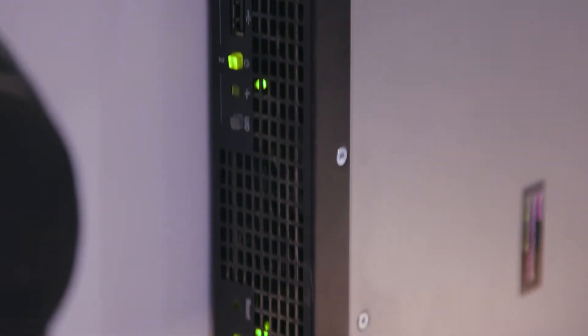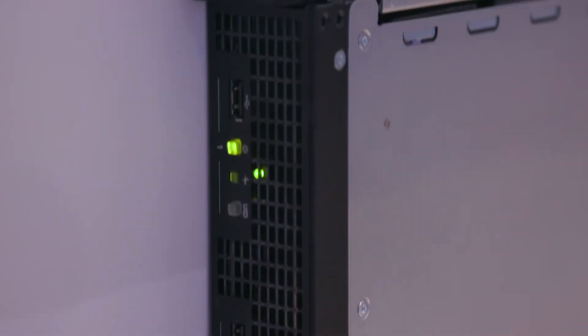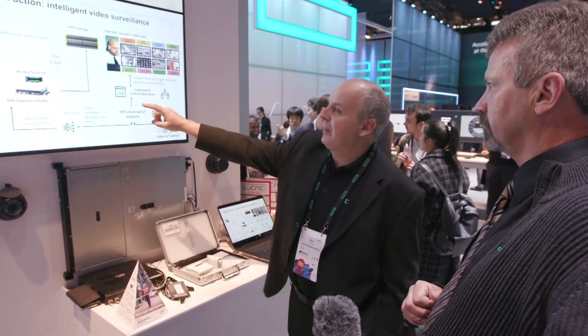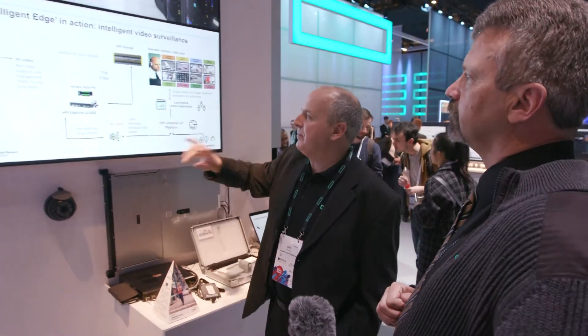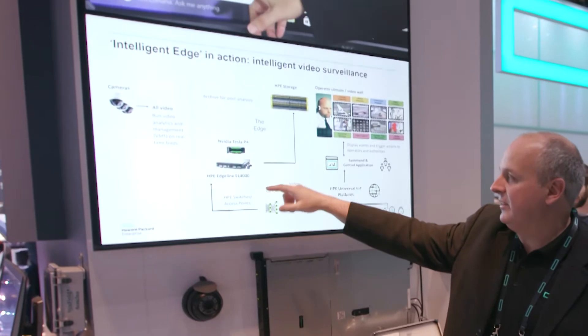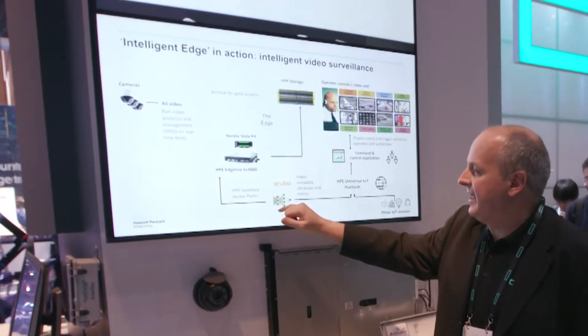The hardware here is an EdgeLine EL4000 — the largest of the EdgeLine series. This is running XTERRA video analytics. We're taking information from these cameras here, analyzing that data on this EdgeLine, and only pulling the relevant metadata. As you can see in this diagram, the EdgeLine is running Nvidia Tesla P4 cards, analyzing the data there.